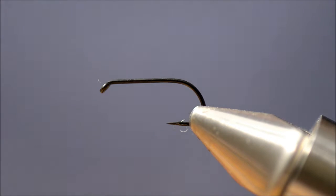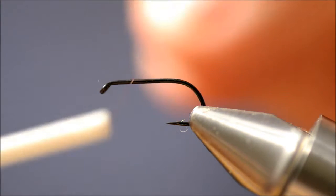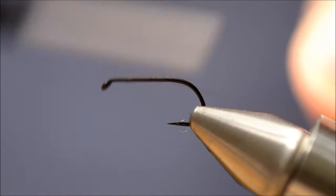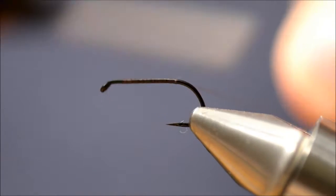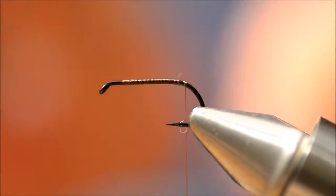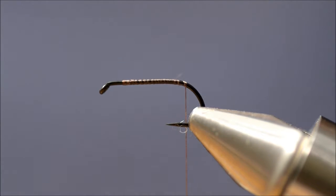So now I'm going to tie what I call the CNT, which is a nymph tied with a wood duck tail feather. The hook is a TNC 102Y size 15.